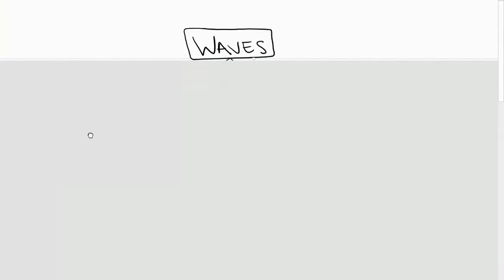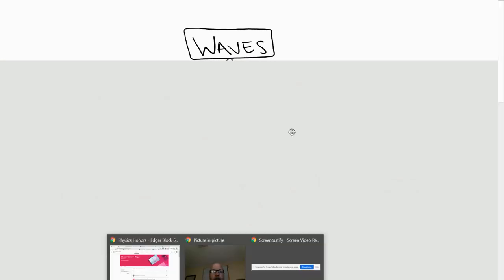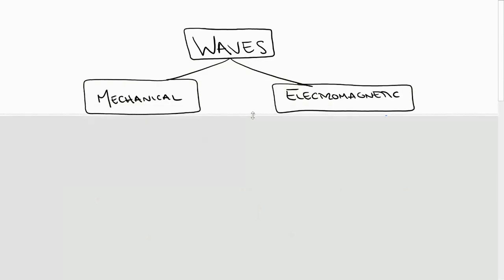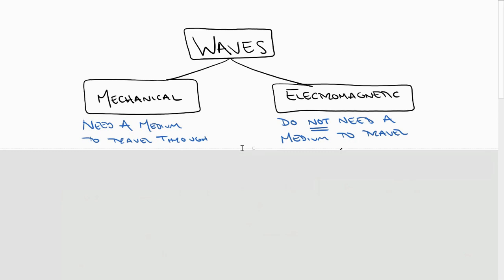All right. So up at the top of a nice clean sheet of paper, I would like you to write down the word waves. And as Mr. Anderson nicely explained last time, waves could be broken down into two broad categories, mechanical and electromagnetic. And the fundamental difference between those two was not understood until 1897, but a mechanical wave needs a medium to travel through, whereas an electromagnetic wave does not need a medium to travel through. A fundamental difference.